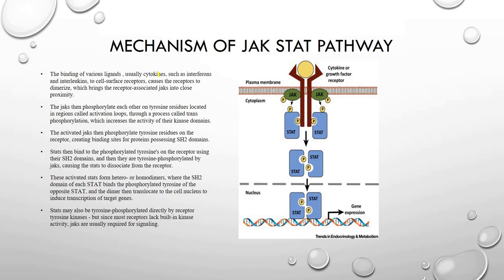Many cytokines, growth hormone, prolactin, and interferons act through this type of receptor. The binding of various ligands — usually cytokines such as interferons and interleukins — to the receptor causes dimerization and brings the receptor-associated JAKs into closer proximity. The JAKs then phosphorylate each other on a tyrosine residue located on regions known as the activation loops, and this process is known as transphosphorylation.